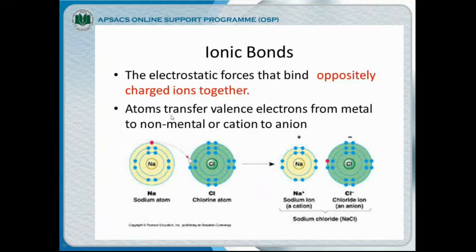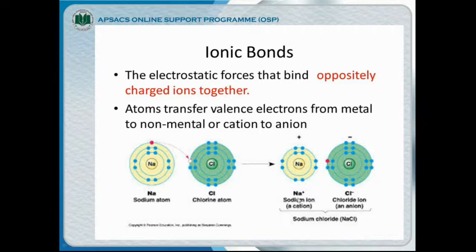We can say atoms transfer valence electrons from metal to non-metal, or from cation to anion. Here we have the example of sodium as a metal and chlorine as a non-metal. One electron is present in the valence shell of sodium and seven electrons are present in the valence shell of chlorine. Sodium loses one electron and forms a sodium cation, and chlorine gains that electron and forms a chloride anion, and sodium chloride is formed.